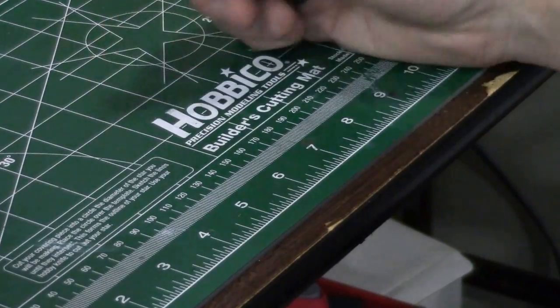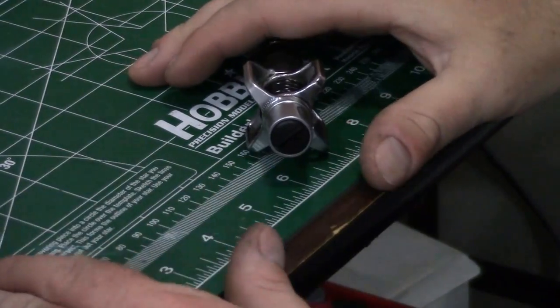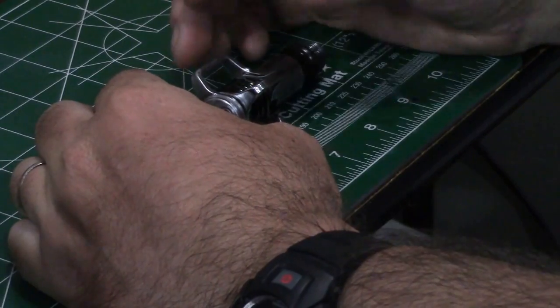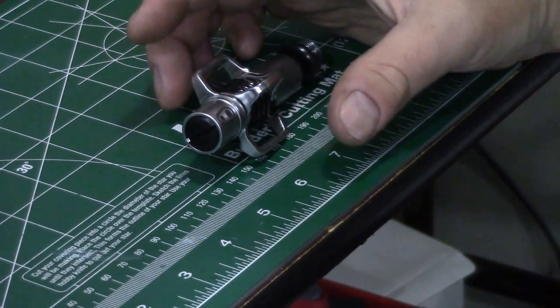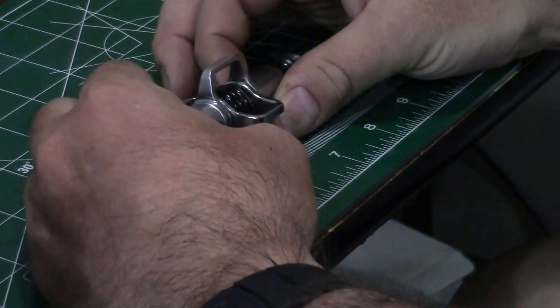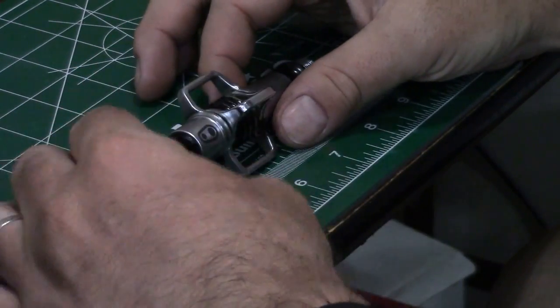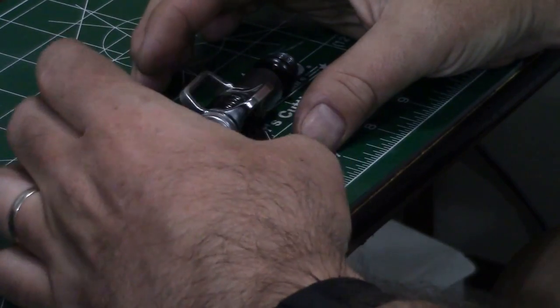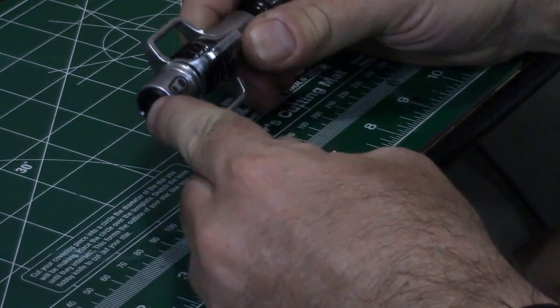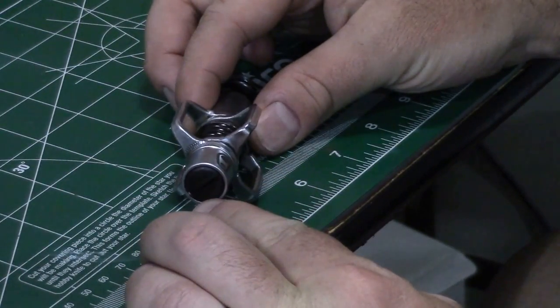As you can see today we have a Crank Brothers egg beater pedal here and we are going to do maintenance on this egg beater pedal. So you're aware, I won't say all Crank Brothers, but both the egg beaters and the candy pedals are going to be serviced the same way. Now if you have a mallet, typically the mallet comes in two pieces and it will pull apart that way, but this, because the spindle goes all the way through the center and it doesn't have a big mallet piece, these and the candies are all going to be serviced the same way.